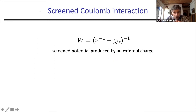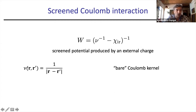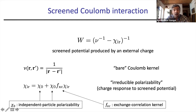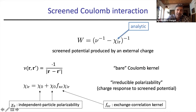The screened Coulomb interaction is an operator of r and r-prime, defined as the screened potential produced by an external charge perturbation. It is given in terms of two ingredients: the bare Coulomb kernel v(r, r'), which is the usual 1/r, minus the irreducible polarizability — which is the charge response to a screened potential, given by the electrons in the independent-particle picture interacting via the exchange-correlation kernel. The screened Coulomb interaction written this way is an analytic function, so the root of the problem is in the bare Coulomb kernel, which has a diverging q=0 component.